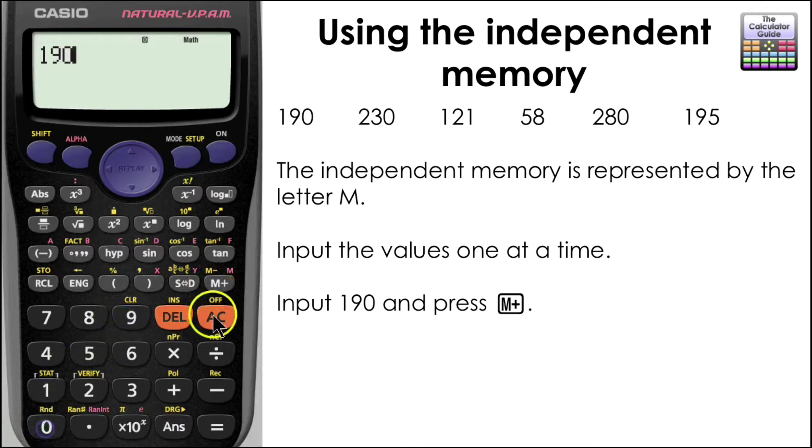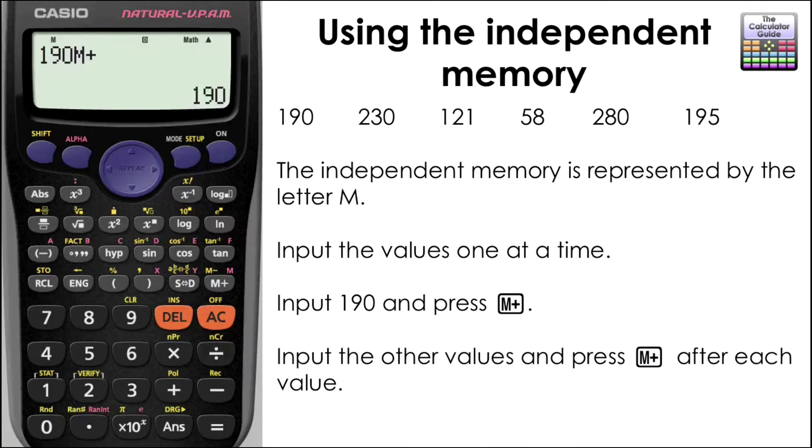We're going to input the values one at a time. Firstly we'll start with 190 and then you need to press M plus. This should add it to the independent memory.